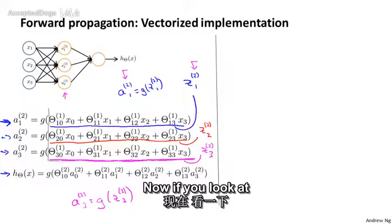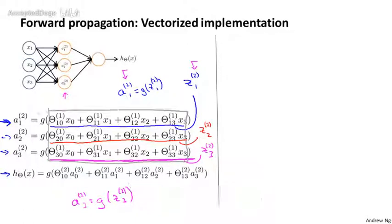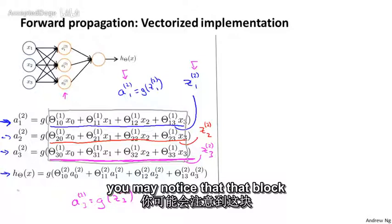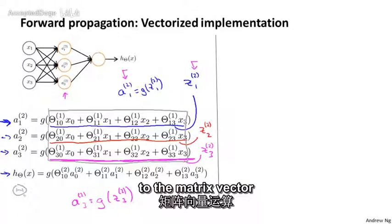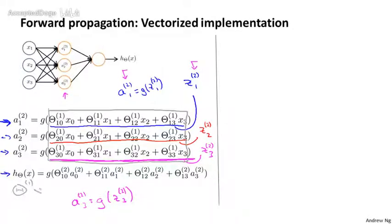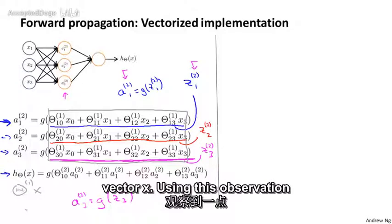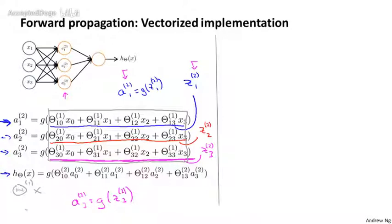If you look at this block of numbers, you may notice that it corresponds suspiciously similar to the matrix-vector operation — specifically, matrix-vector multiplication of theta 1 times the vector x. Using this observation, we're going to be able to vectorize this computation of the neural network.